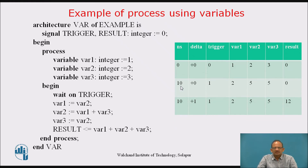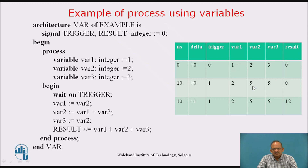Initially trigger is 0 and var1, var2, var3 are all initialized. When trigger changes to 1 at 10 nanoseconds, the process starts executing and all variable assignments take place immediately at 10 nanoseconds. So var1 becomes 2, var2 becomes 5, and var3 becomes 5. But the signal assignment takes place after delta delay — so at 10 + delta nanoseconds, result becomes 12.